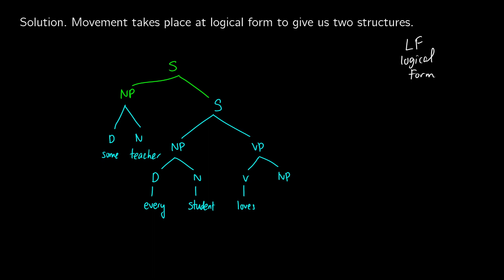So this is going to be some teacher, we're going to give it an index, let's say this is two, and we're going to put a two there, and we're going to leave a trace in its place. So this is kind of like doing our y, but instead of putting y in there, we're putting two.